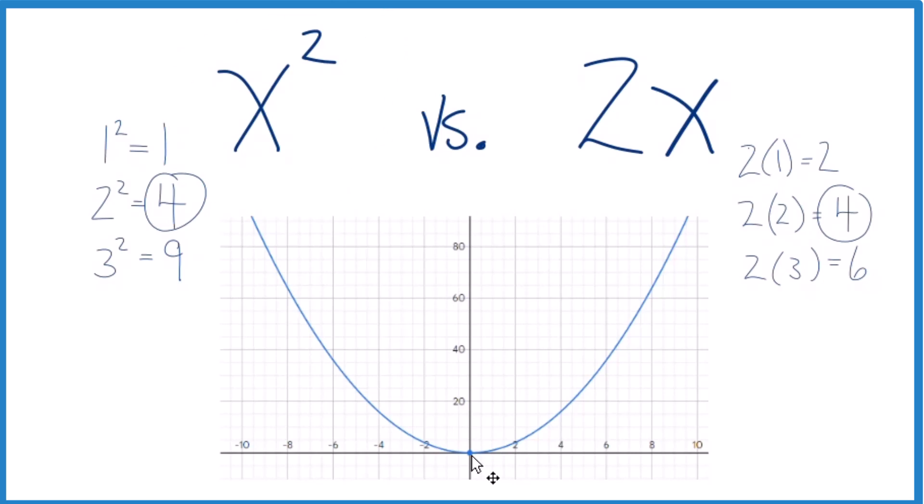And we can see it actually goes up for the positive numbers we put in here. This is the positive side here. It goes up and it goes up pretty quickly. It's not a straight line.